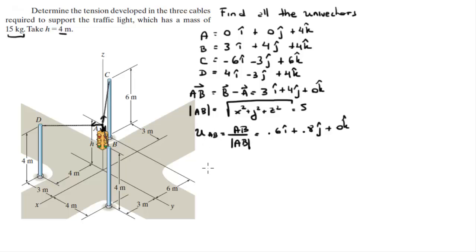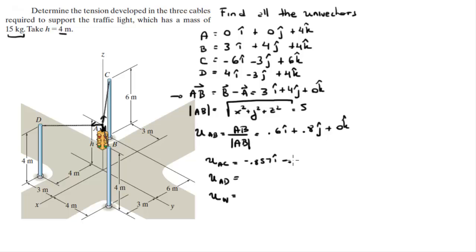Now we go through the same motions to find unit vectors AC, AD, and the unit vector for the weight of the streetlight. Unit vector AC comes out to -0.857i - 0.429j + 0.286k. Unit vector AD is 0.8i - 0.6j + 0k. And the unit vector for the weight goes straight down in the negative k direction, so it's simply -1k.